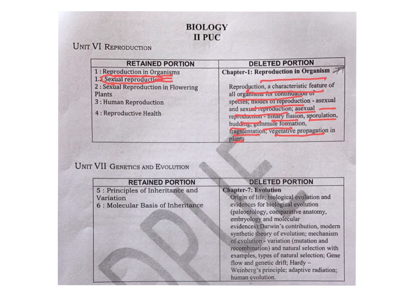The third chapter, human reproduction, is totally retained. In that, you have to study about the reproductive organs — male and female reproductive organs — fertilization, male gamete formation (spermatogenesis), oogenesis, fertilization, then post-fertilization events — embryo development, delivery of the baby — all these are kept.